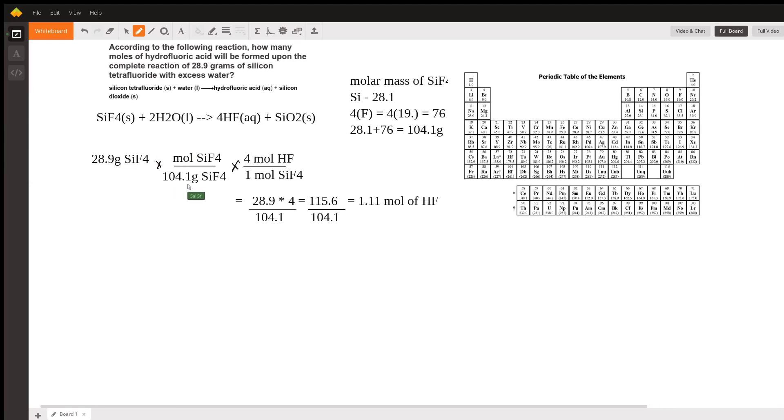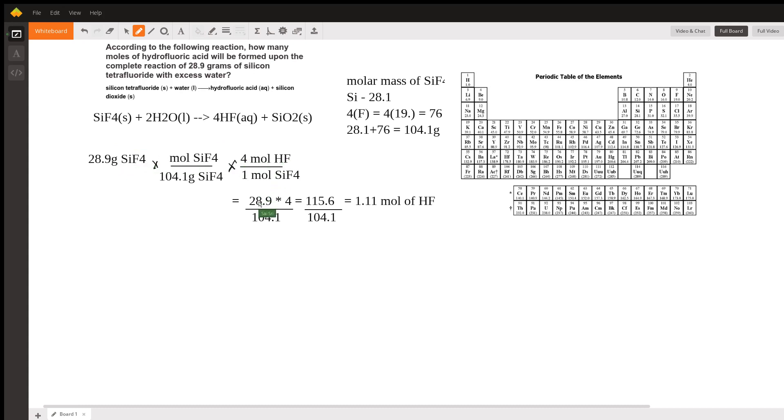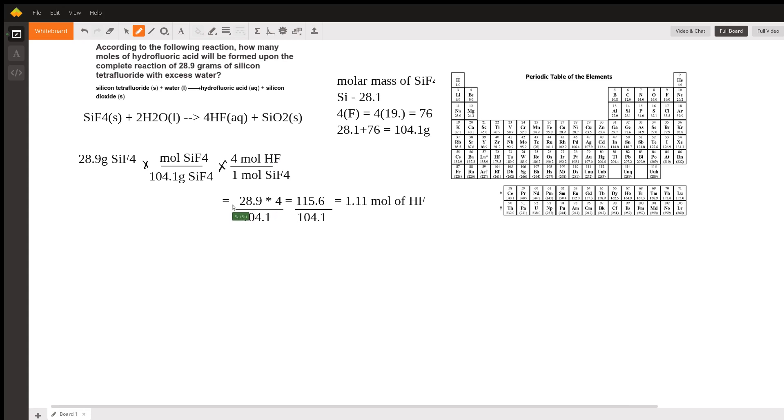So 28.9 divided by 104.1 grams, then I multiply this by the mole to mole ratio. I see that for one mole of SiF4, I'm making four moles of HF. Thus I multiply it across. When I do this, I usually multiply the numerator values together and keep the denominator values separate. Then I get, when I do 115.6 over 104.1, I get my final answer as 1.11 moles of HF. Hope this answers your question.